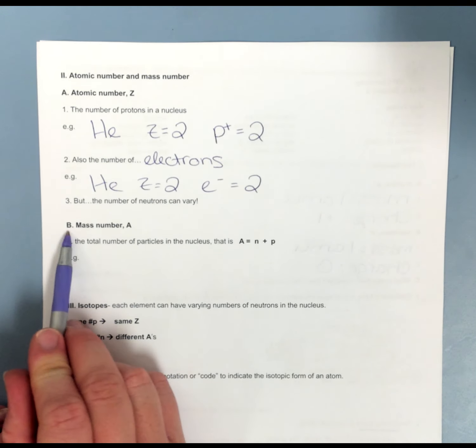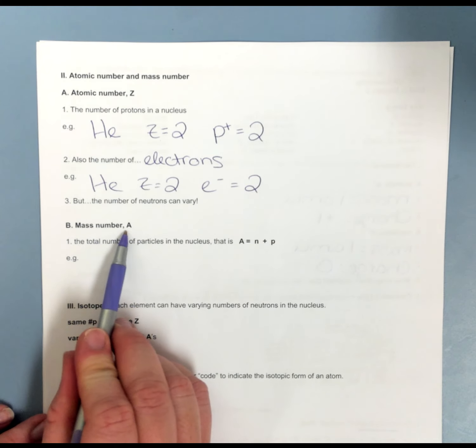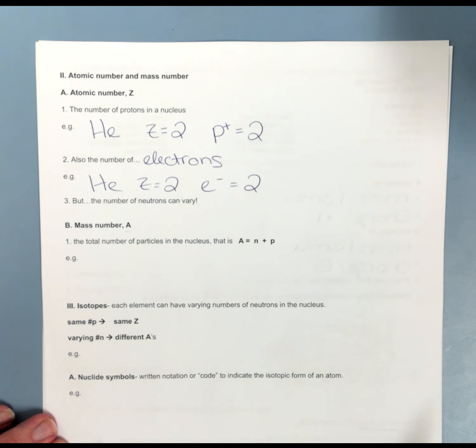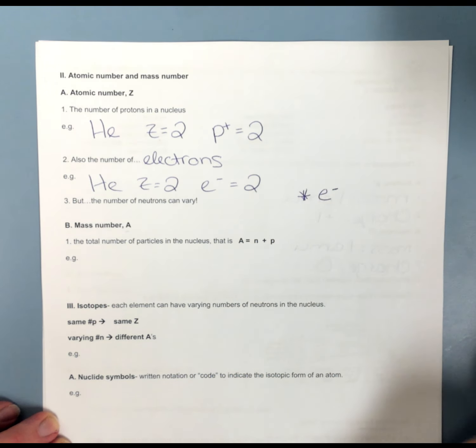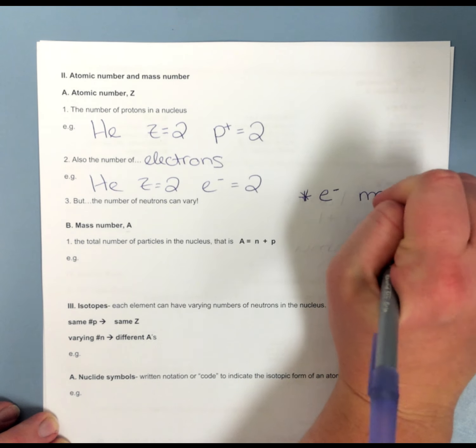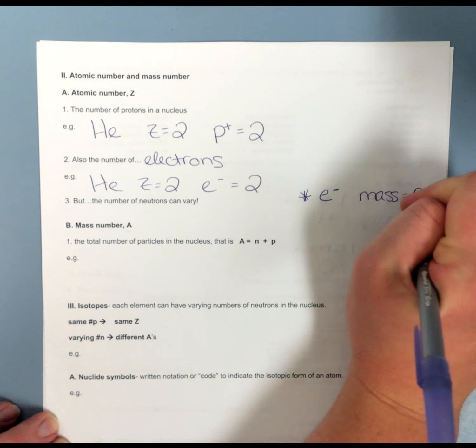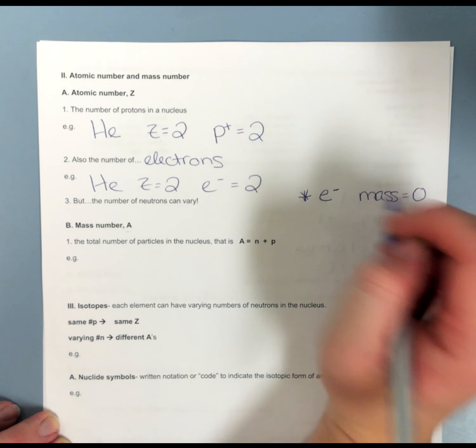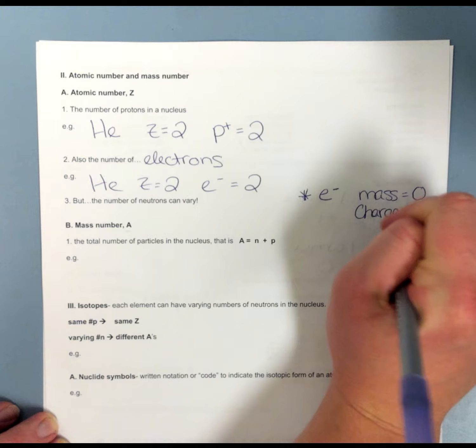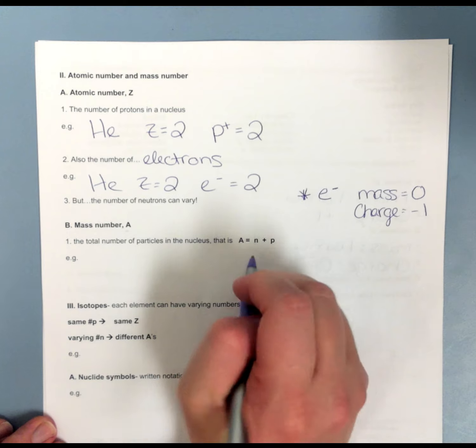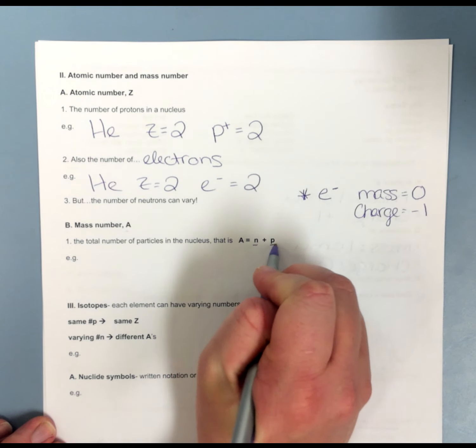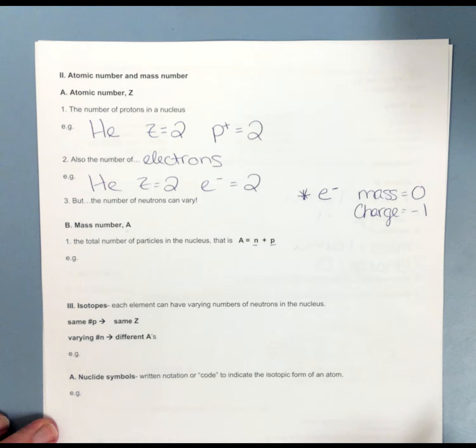The mass number, which we use the letter A to represent mass number, is the total number of particles in the nucleus. Electrons have a mass that's so small, it's basically zero. So we use e- to represent electrons. My mass for electrons is really close to zero, so we're just going to call it zero. And my charge of an electron is about negative one.